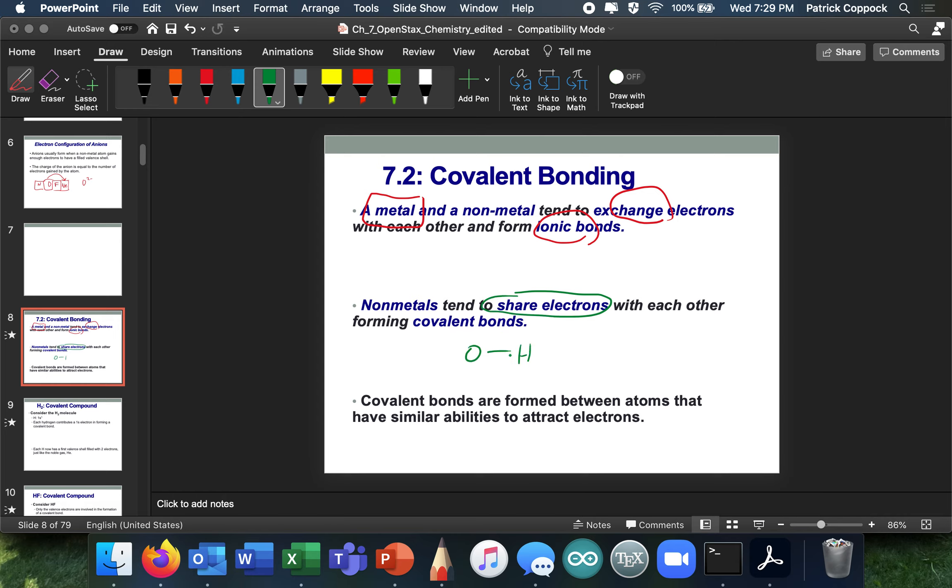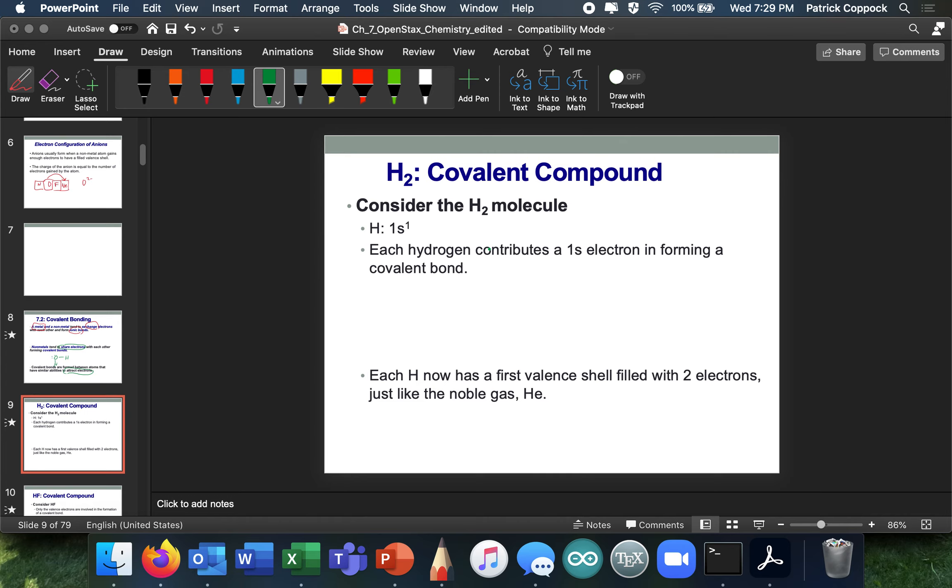They share electrons with each other and form covalent bonds. So here's a non-metal, and here's a non-metal. And those form bonds, covalent bonds, right? It's very important in nature. So covalent bonds are formed between atoms that have similar abilities to attract electrons.